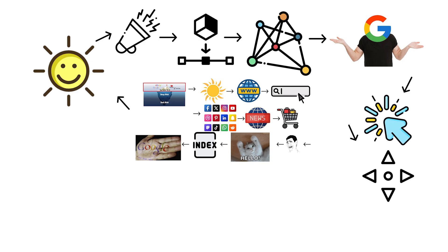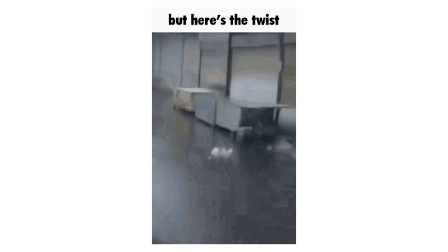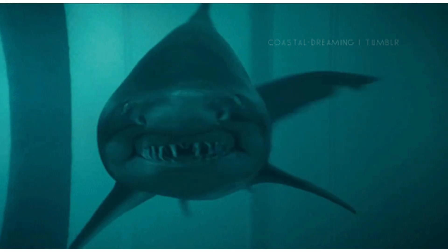It's bright, noisy, and tracked by algorithms that know what you're thinking before you do. Every click, every scroll, every ad impression — recorded. But here's the twist: this visible internet is only about 5% of the whole thing. You're paddling in the digital kiddie pool while a vast, unseen ocean stretches below you.